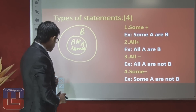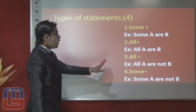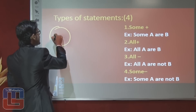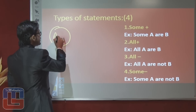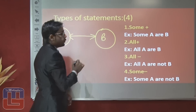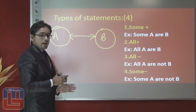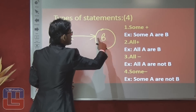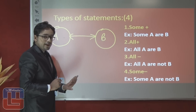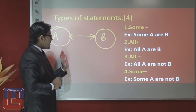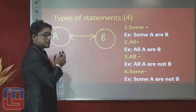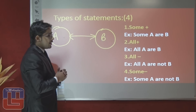The third statement is 'all A are not B.' It means all part of the first variable will not go in the area of the second variable, and vice versa — all part of the second variable will not come in the area of the first variable. The answer will be the same from both sides: all A are not B, all B are not A, some A are not B, some B are not A.